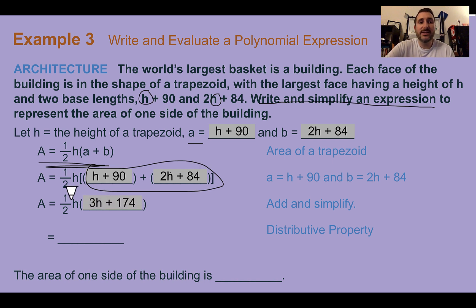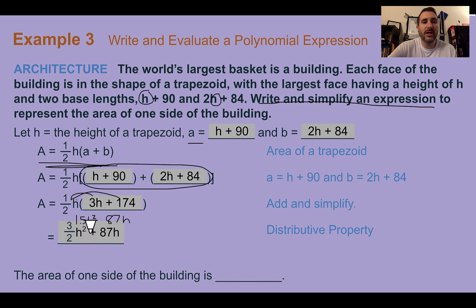Now, we're getting closer to the end, let's distribute the half and the h. So half of 3 is 1.5, h times h is h², half of 174 is 87, and we still have to multiply that h even though there's nothing to combine it with so we have an h. So our final would be 3/2h², which I put 1.5 instead of 3 halves, plus 87h.